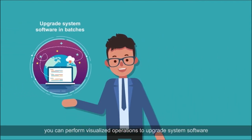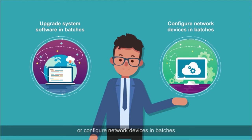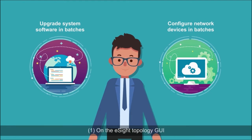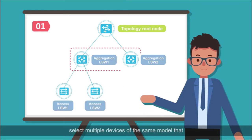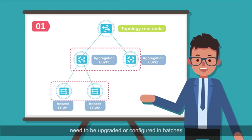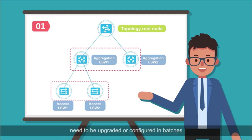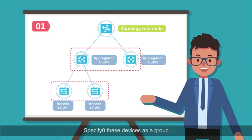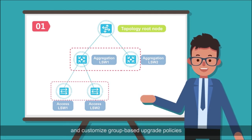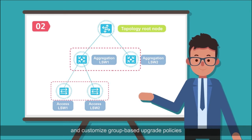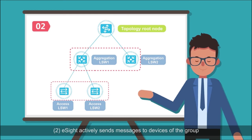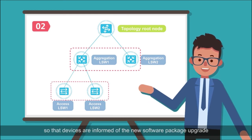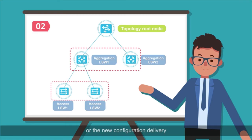At the O&M phase, you can perform visualized operations to upgrade system software or configure network devices in batches. On the eSight Topology GUI, select multiple devices of the same model that need to be upgraded or configured in batches. Specify these devices as a group and customize group-based upgrade policies. eSight actively sends messages to devices of the group so that devices are informed of the new software package upgrade or the new configuration delivery.